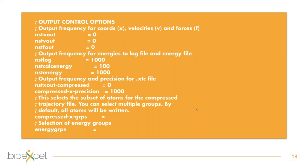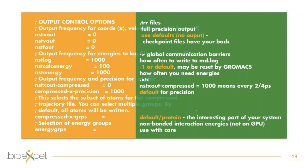Now having determined what type of MD simulation we want to do and what integrator to use, it's all about how much information you want to get out. Historically we used to write full precision TRR files that took up lots of space and could be used for restarting simulations — that's where you have the coordinate xout, velocity vout, and force out output frequencies. You can save lots of disk space by leaving these defaults to zero and using checkpoint files to continue your simulation run.